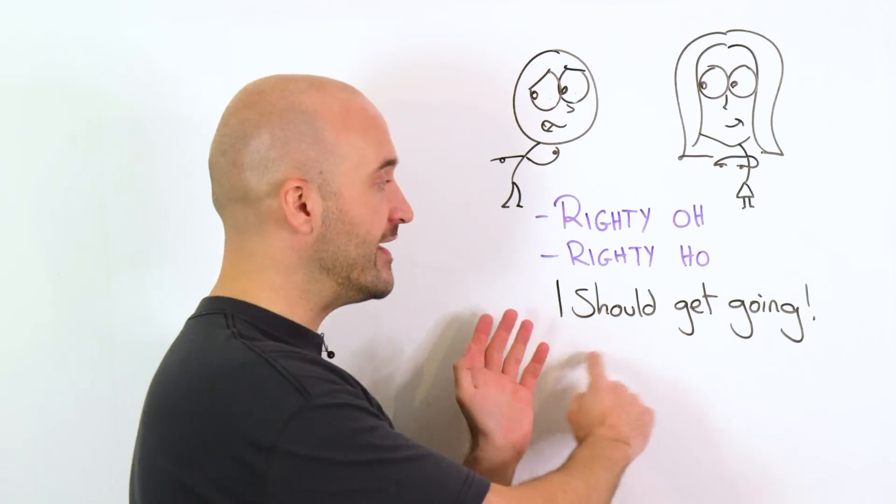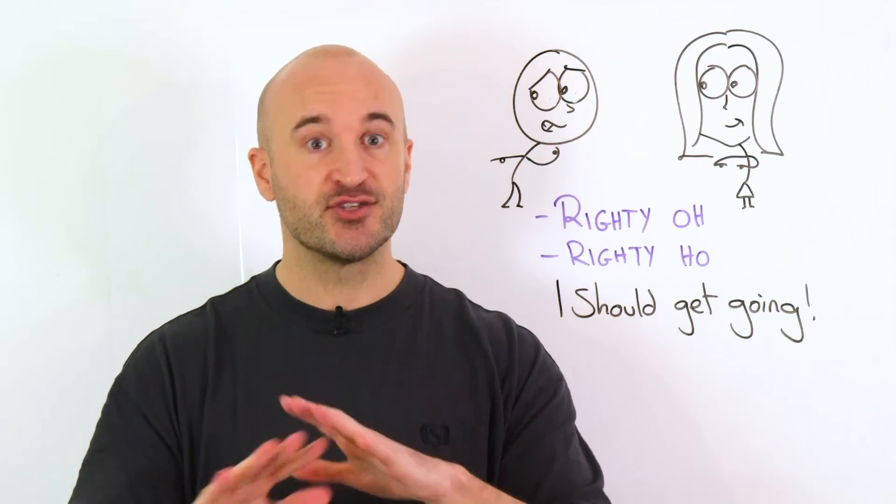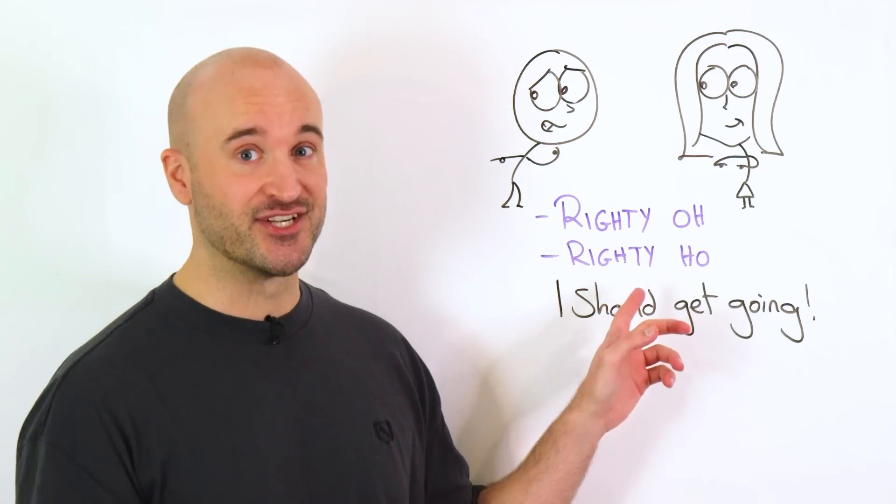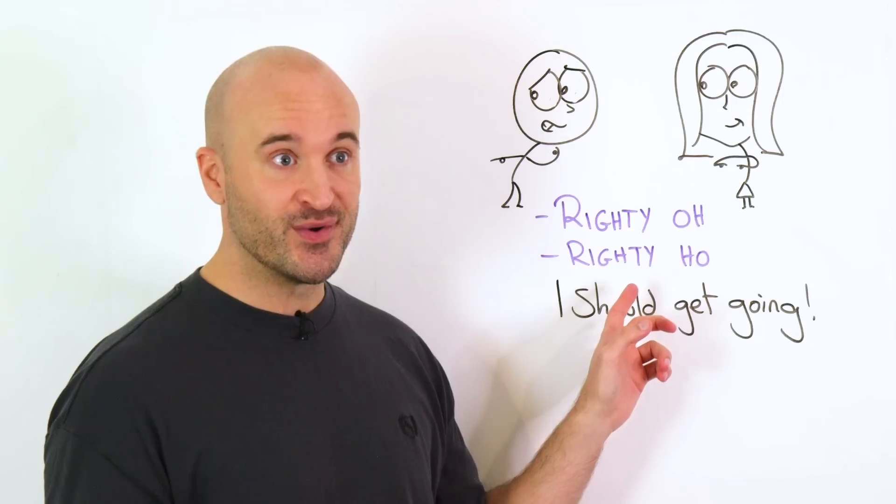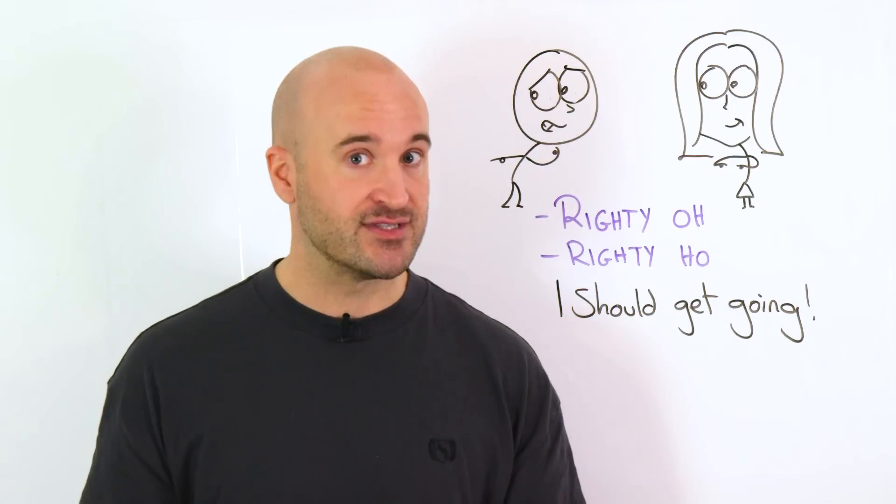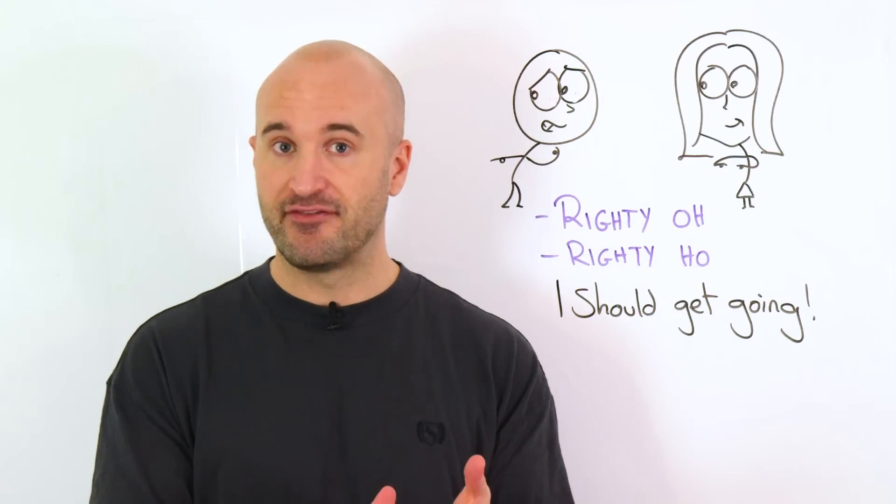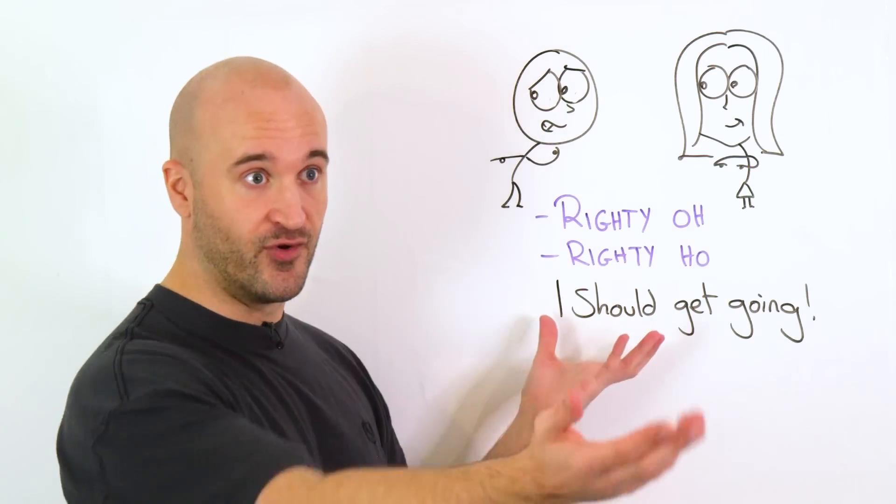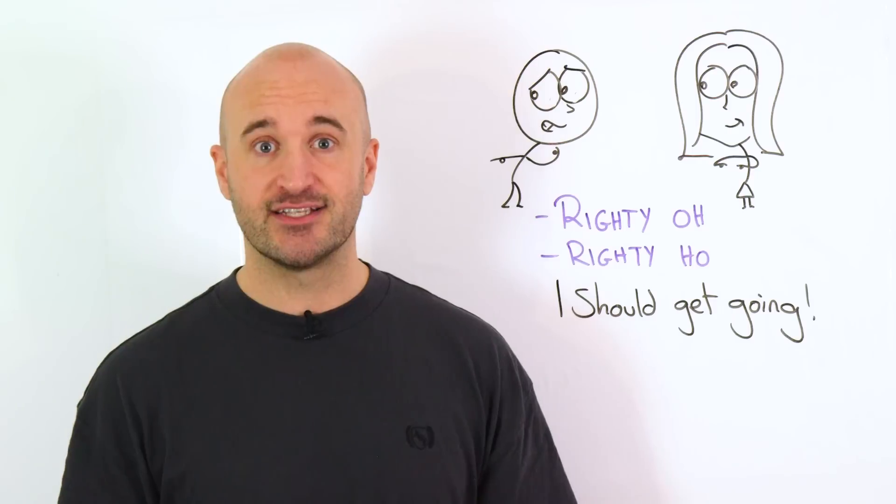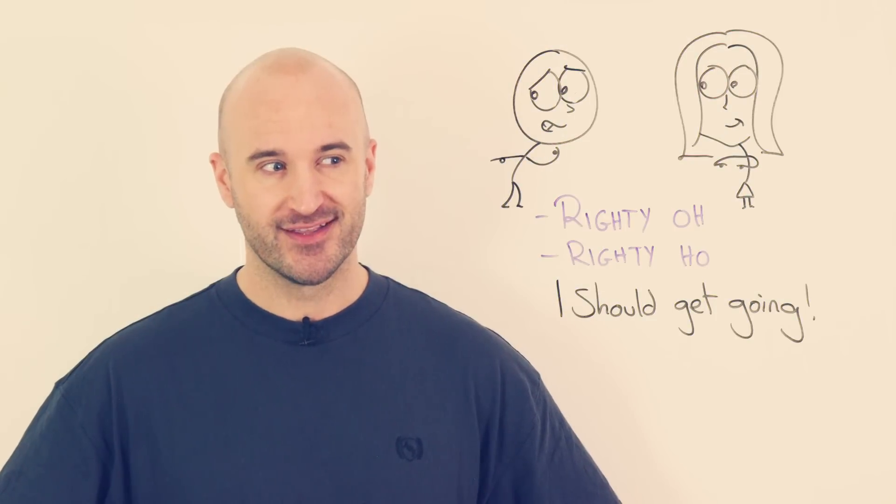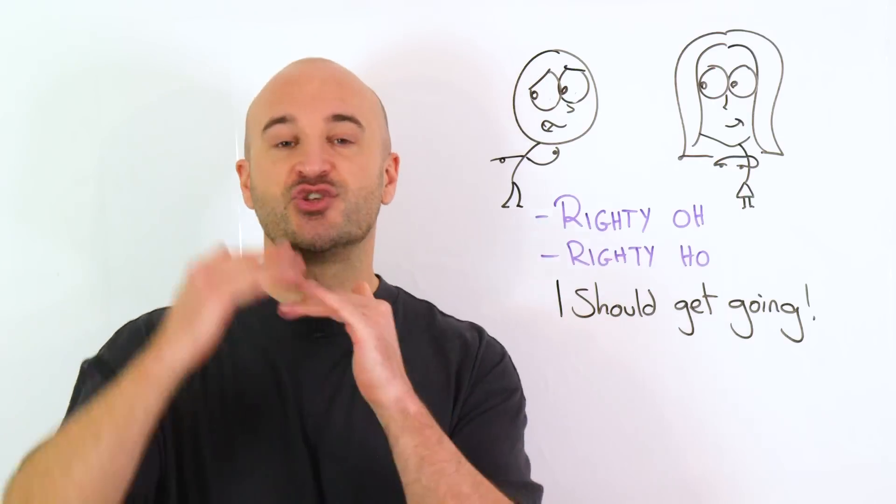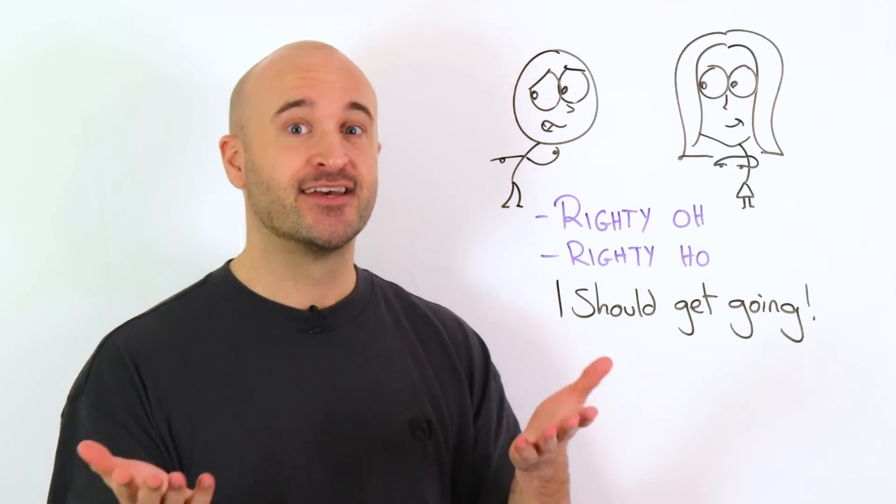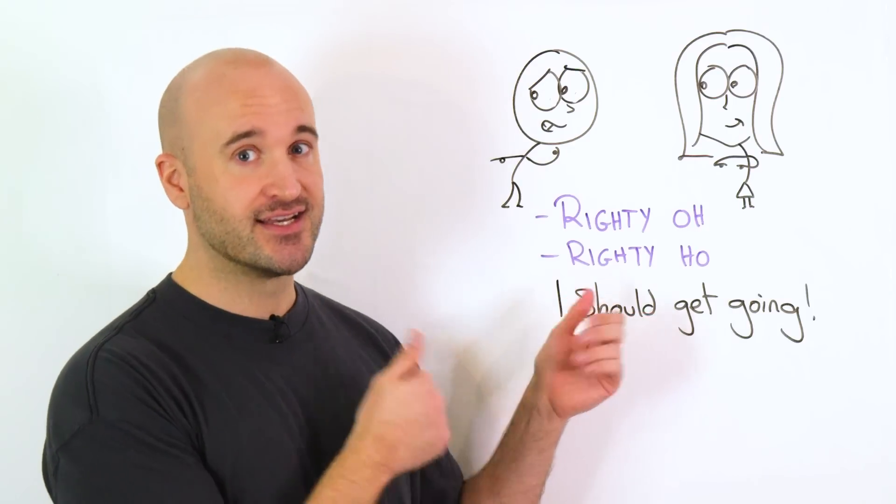By the way, I should get going is a softer, nicer way to say I'm leaving. Did you notice the pronunciation too? Rightio. Yes, it's a T, but we pronounce it like a D here. However, if you want to use a posh RP sounding voice for this, that's fine too. Righty ho. But that sounds too much. You want this to sound soft, right? Change the T to a D. It's much better.